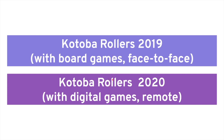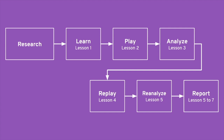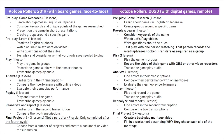I'm going to first compare and contrast the models briefly before showing you the details of what I did this year. This is Kotoba Rollers 2019: the cycle goes from researching and choosing a game, to learning and playing the game, analyzing the play session based on a transcription of play recordings, improving language for a second gameplay session, and then a final report. The underlying structure of the framework did not change significantly between the two versions.